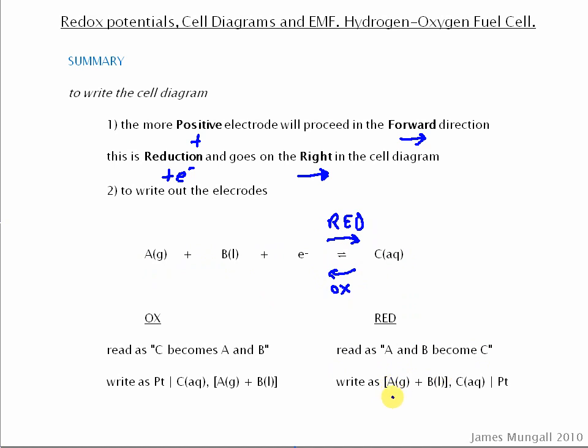So there, there's A and B, comma, becoming C. And notice that that is written out exactly the same as it is there.